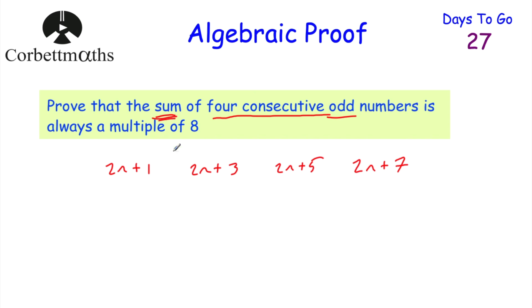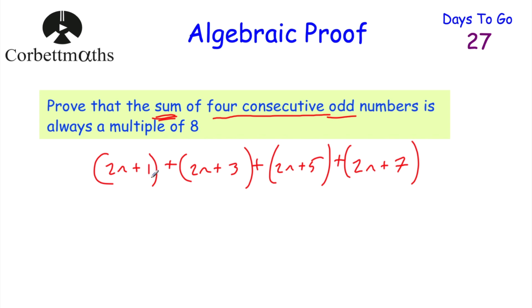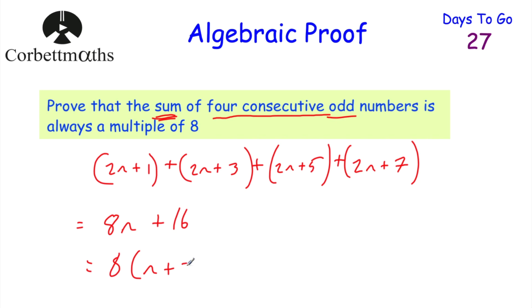We've been asked to show the sum, so let's add them all up: (2n+1) + (2n+3) + (2n+5) + (2n+7). So 2n + 2n + 2n + 2n is 8n. And 1 + 3 + 5 + 7: 1+3 is 4, plus 5 is 9, plus 7 is 16. So we get 8n + 16. We want to show it's always a multiple of 8, so we factorize: 8(n+2). Because it's 8 multiplied by something, therefore it's a multiple of 8.